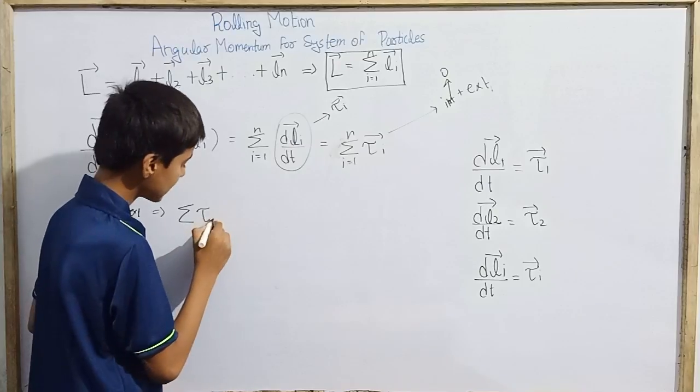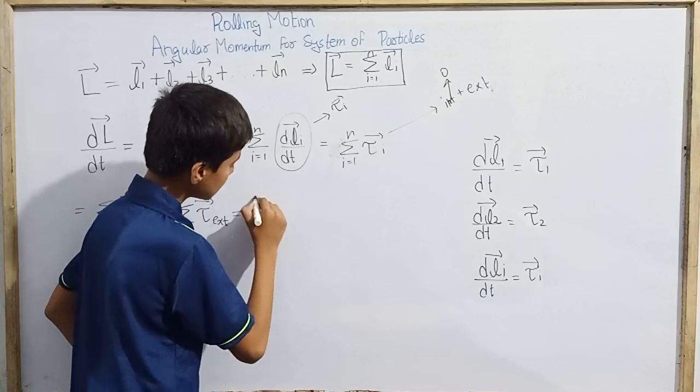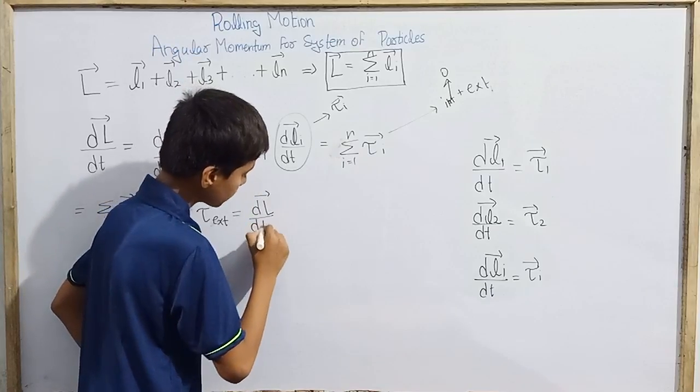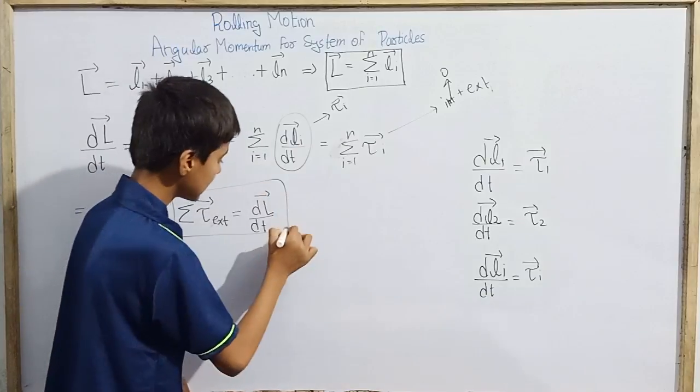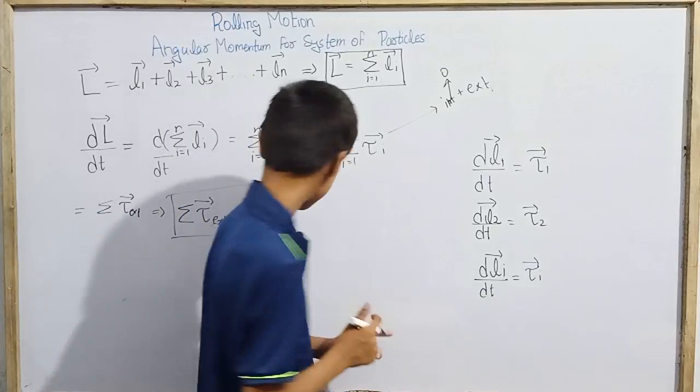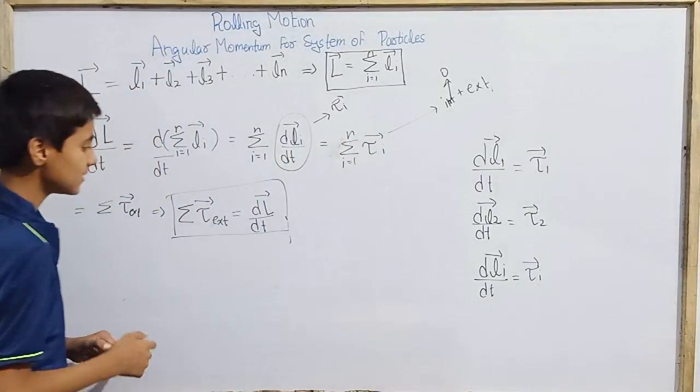The net external torque on this system is the derivative of total angular momentum of this rigid body or system of particles. This is not the answer, this is just an expression, an equation, with respect to time.